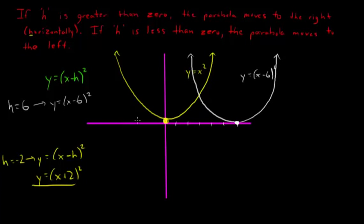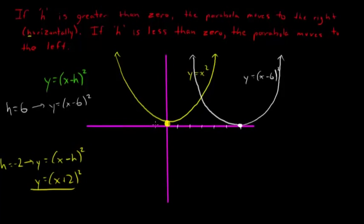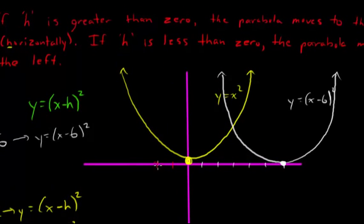which means that we're just going to take that vertex of y equals x squared, and we're going to move it over 1, 2 to the left. Draw that same parabola, just 2 units to the left. And so h moves things horizontally, h is for horizontal.